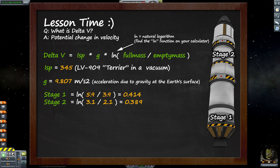Doing the same thing with our second stage: we've got our full mass of 3.1 divided by our empty mass of 2.1, and we calculate that, which is 1.4761. We run our ln function on that, and that gives us 0.389. You can be as accurate there as you want, but for simplicity we've rounded these a little.